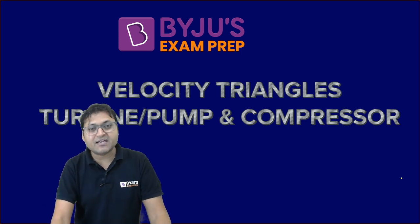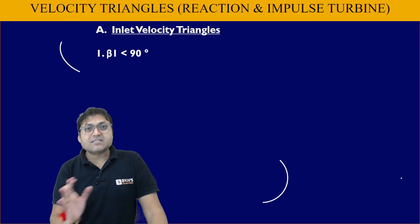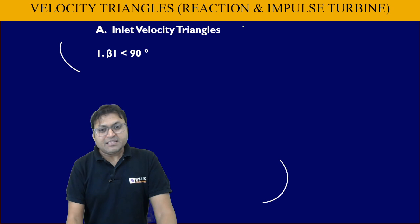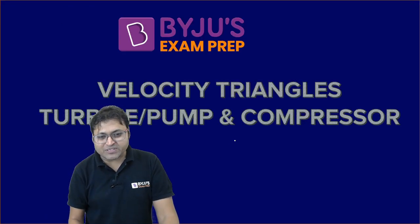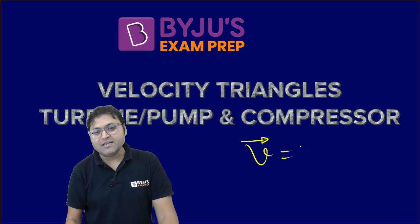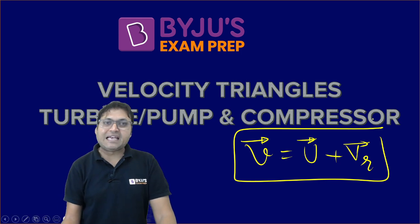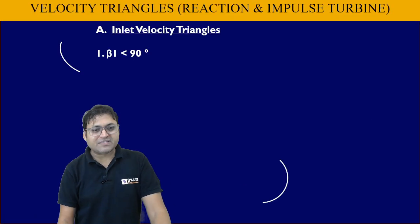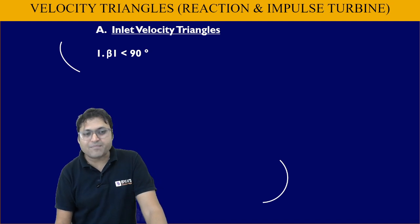Let us start with the turbine first. For the impulse or the reaction turbine, the basic principle for the velocity triangle is: the absolute velocity V should always be the resultant of blade velocity plus the relative velocity of the fluid, whether at inlet or at outlet. First, try to understand the inlet velocity triangle for the reaction and the impulse turbine.